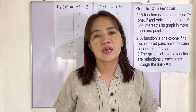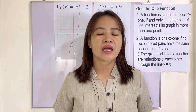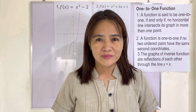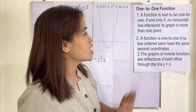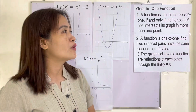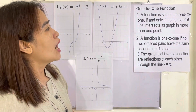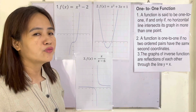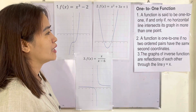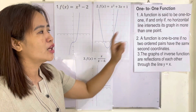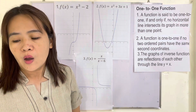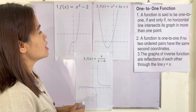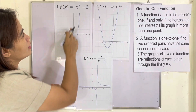Meaning to say, no x-coordinate and no y-coordinate are repeated. Here are some features of a one-to-one function. Number one: a function is said to be one-to-one if and only if no horizontal line intersects its graph in more than one point.